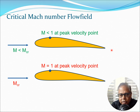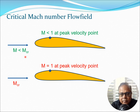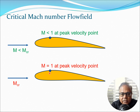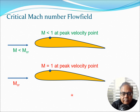Recapping from the previous lecture: if you are flying at a Mach number lower than the critical Mach number, then all points on the airfoil surface will have Mach numbers below 1, even at the peak velocity point — a completely subsonic flow situation. At the critical Mach number, there is exactly one point where Mach number becomes 1, at the peak velocity point — the first encounter of sonic flow.